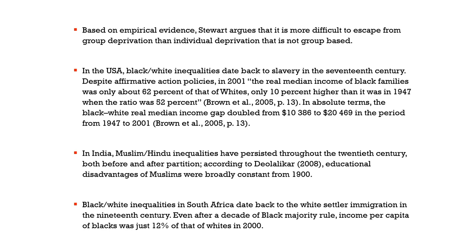In the USA, Black-White inequalities date back to slavery in the 17th century. Despite affirmative action policies, some estimates show that in 2001 the real median income of Black families was about 62% of Whites. In absolute terms, the Black-White real median income gap doubled during the period 1947 to 2001. In India, Muslim-Hindu inequalities have persisted throughout the 20th century. Estimates — for example, Deolalikar 2008 — show that educational disadvantages of Muslims were broadly constant from the 1900s. In South Africa, Black-White inequalities date back to white settler immigration in the 19th century, and even after a decade of Black majority rule, income per capita of Blacks was just about 12% that of Whites in the 2000s.